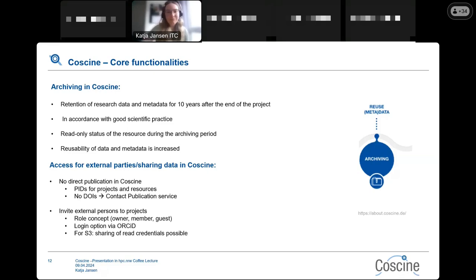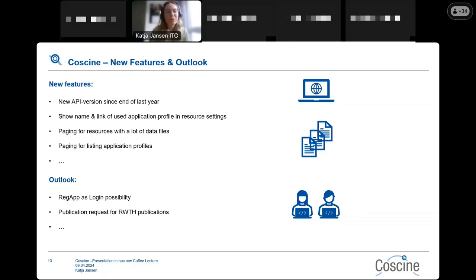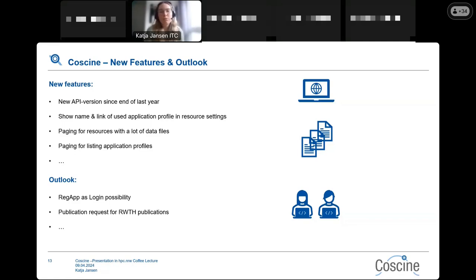New features include a new API version implemented since end of last year. It is now also possible, when going to your resource settings, to see the name and link of the used application profile, which increases reusability. There is also a pagination function for resources with many data files — previously CoSINE tried to load all data files at once which took quite long, and now there is a paging function also for listing all application profiles.